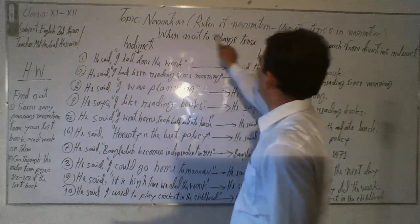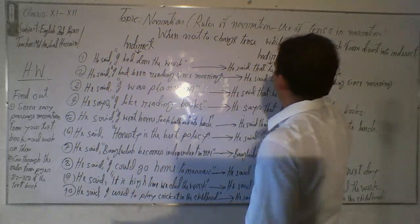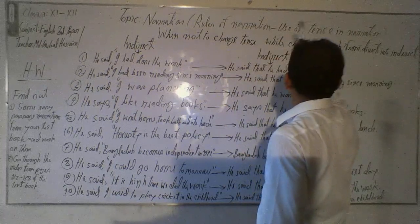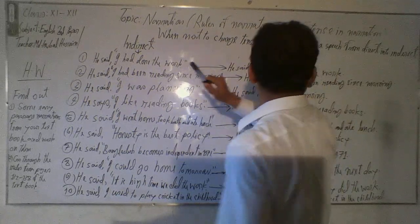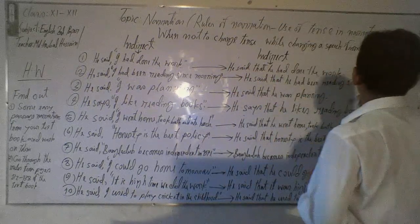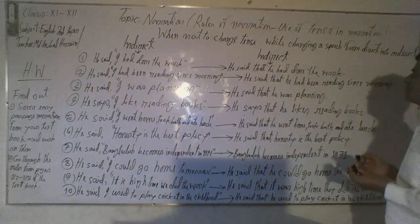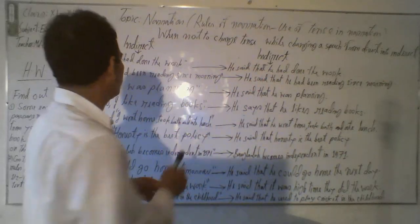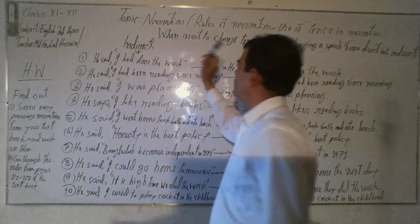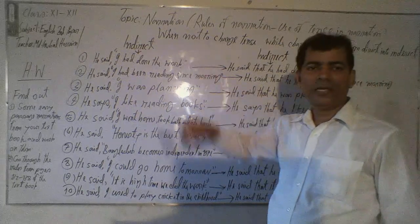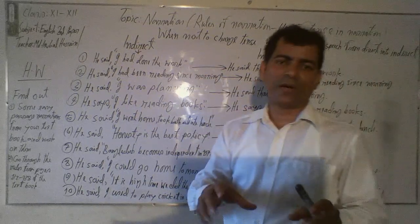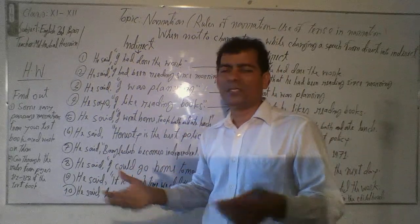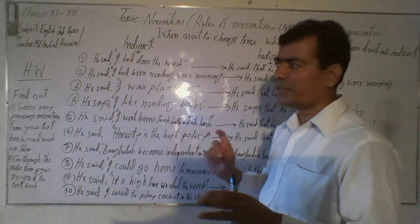The topic is: Rules of Narration — Use of Tense in Narrations. When NOT to change tense when changing speech from direct into indirect. Exception one: 'He said, I had done the work' — past perfect tense. When you find past perfect tense used in a statement or speech, you don't need to change the tense when you convert from direct to indirect.